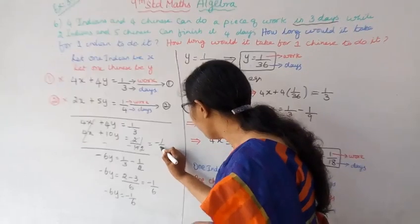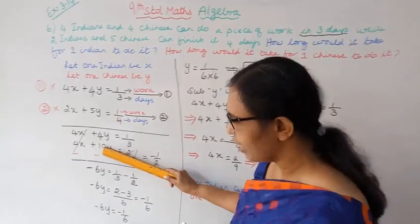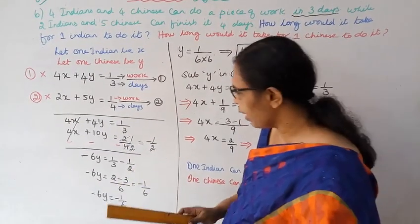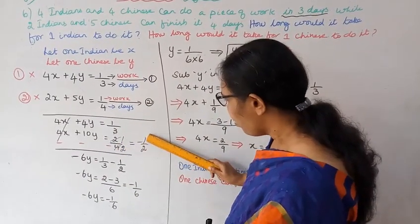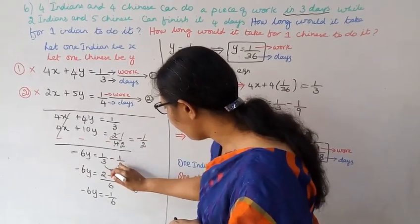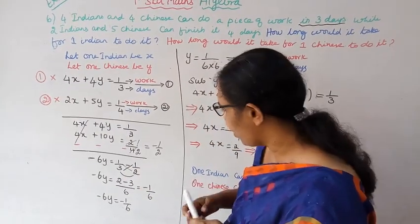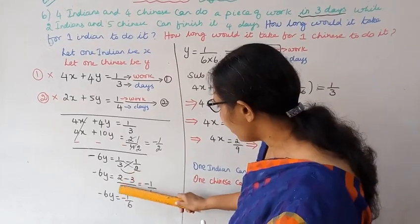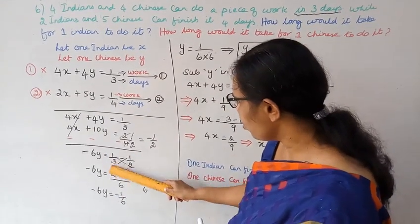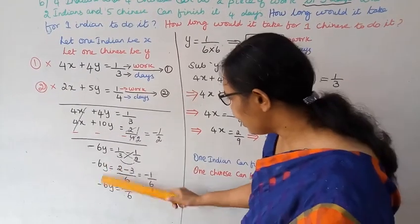Now subtract the equations. 4x minus 4x cancels. 4y minus 10y equals minus 6y. On the right side: 1 by 3 minus 1 by 2. Simplifying: minus 6y equals 1 by 3 minus 1 by 2.